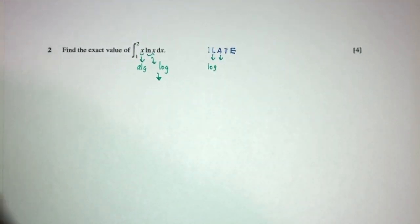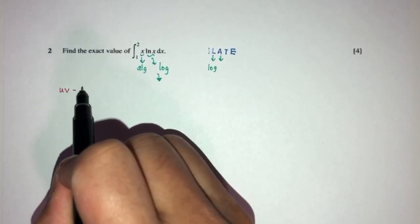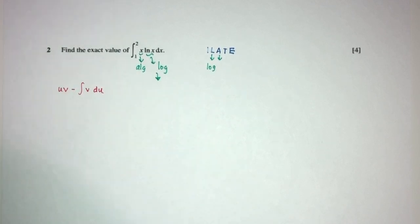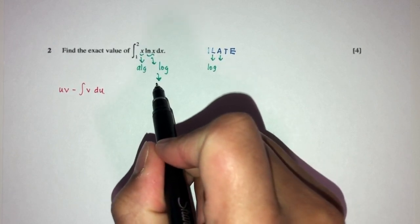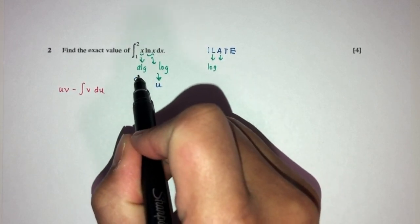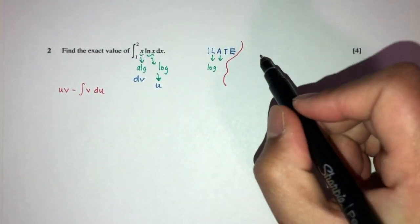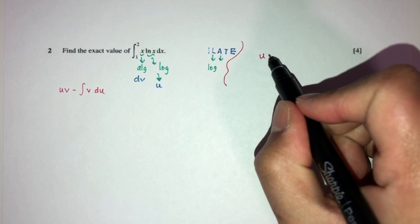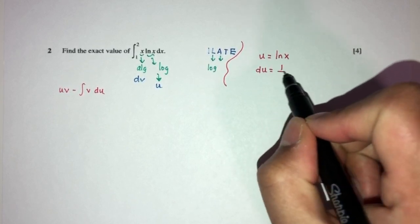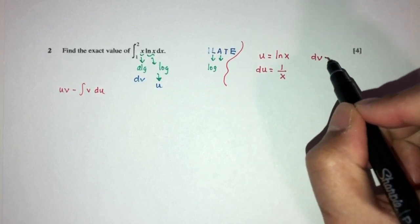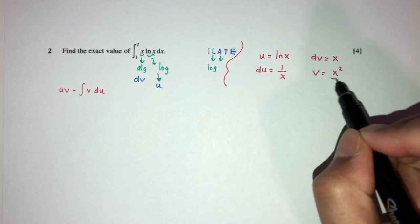So whichever comes first in ILAT, we call it our u. The formula for integration by parts is: uv minus the integral of v·du. Since log comes first, we call ln(x) our u. And the algebraic part, x, will be our dv. For the side note: u equals ln(x), so du equals 1 over x by differentiation. My dv equals x, and v equals x squared over 2 by integration.